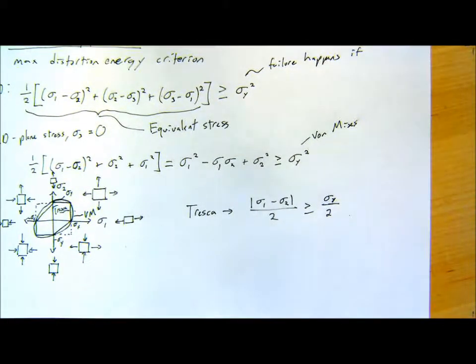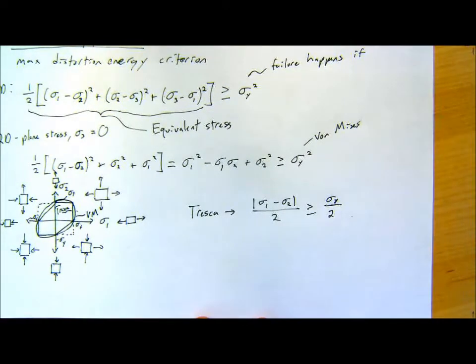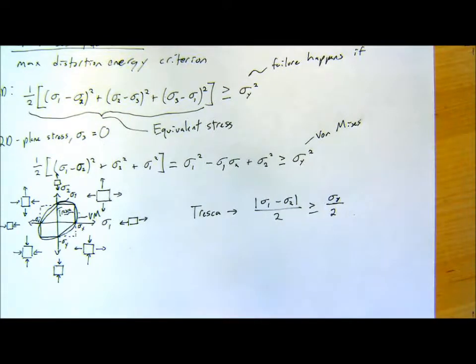There's supposed to be — for the minus sigma1 sigma2 term in the Von Mises formula — is that supposed to be over 2? No.